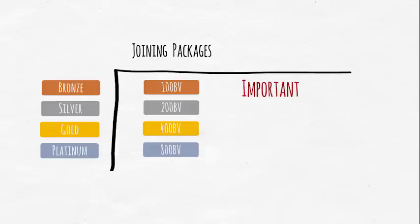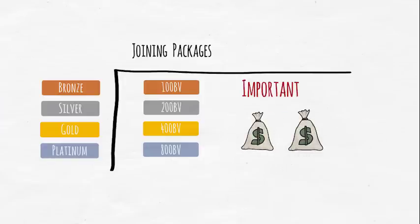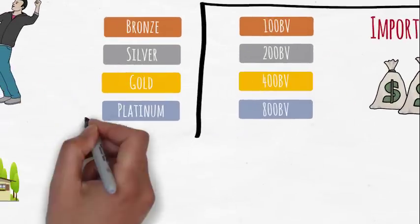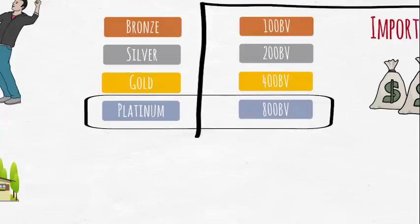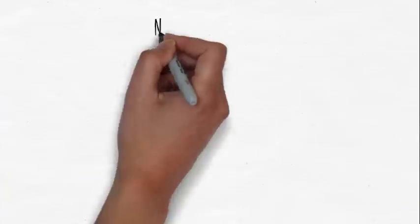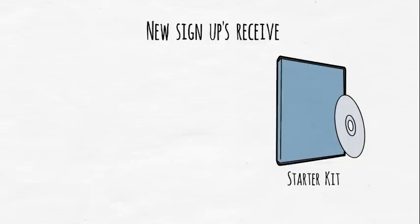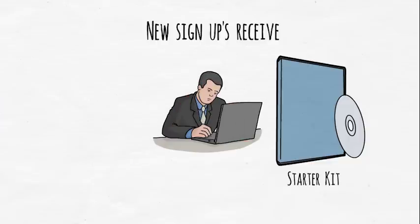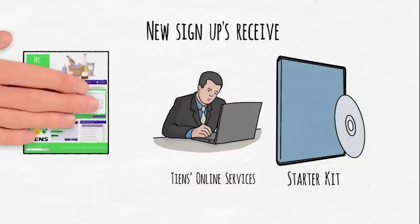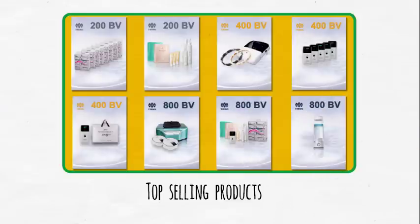Now this is important, because it's by accumulating point value, PV, and bonus value, BV, that you can build up your income. You can see that if you or your team were to select platinum joining package, you would start building up BV credits very quickly. As a new sign-up, you'll receive a starter kit, virtual or hard copy containing essential business information, access to Tienz's online services, your own website, a selection of top-selling products. Now that's great news, but here's another great fact.